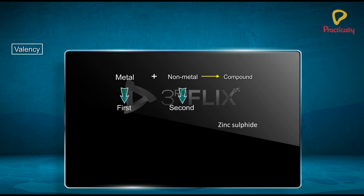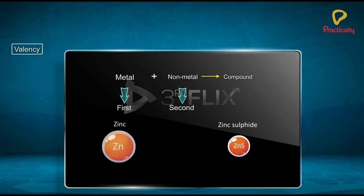In zinc sulphide, ZnS, zinc is represented as Zn and sulphur is represented as S.